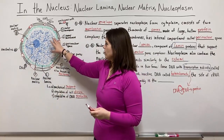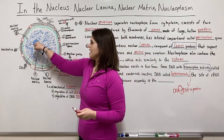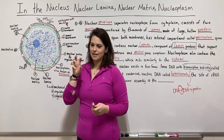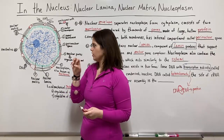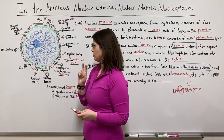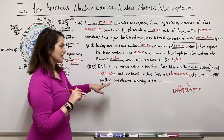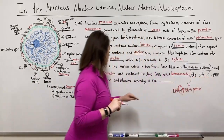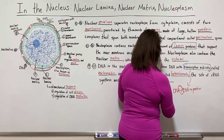Within the nucleus there is a dark-staining region visible as a darker area inside the nucleus — that is the nucleolus. The nucleolus is the site of ribosomal RNA synthesis and ribosome assembly.